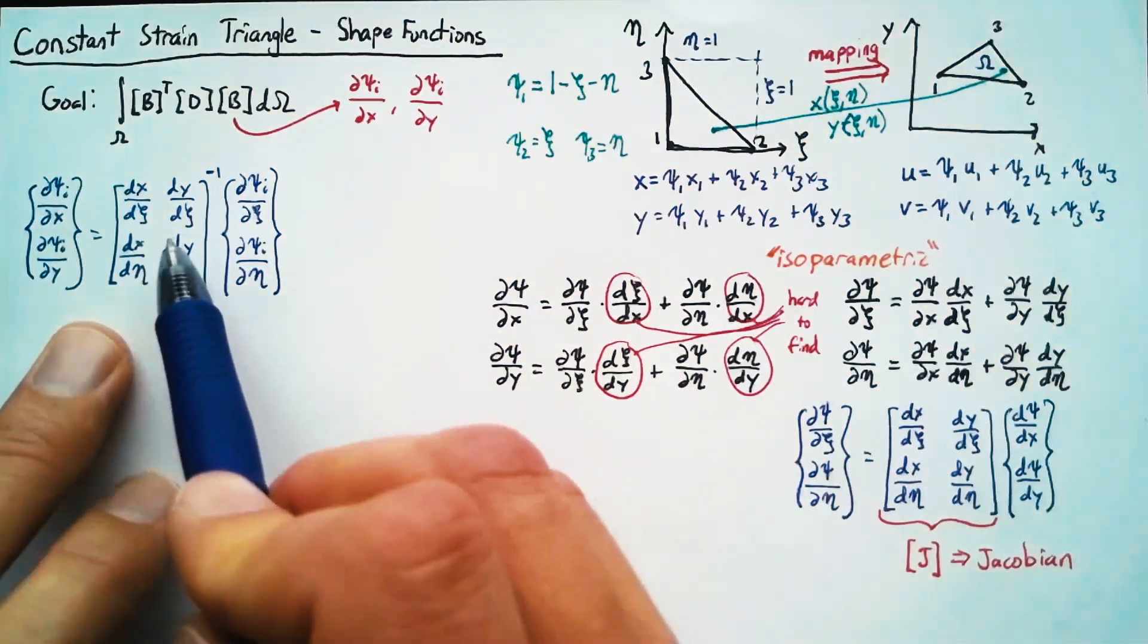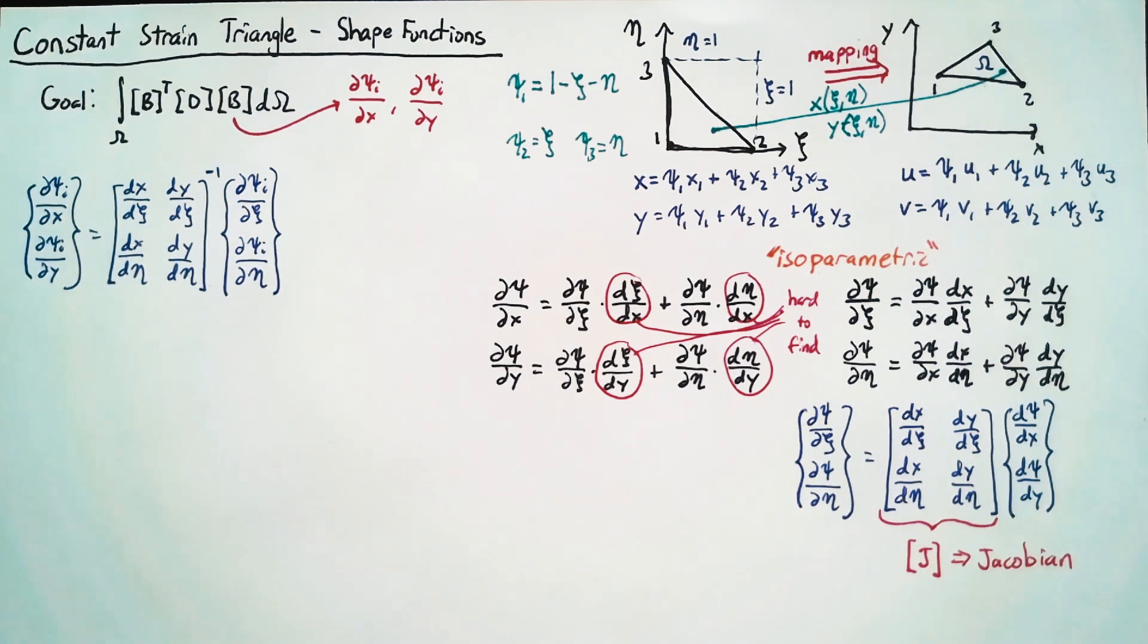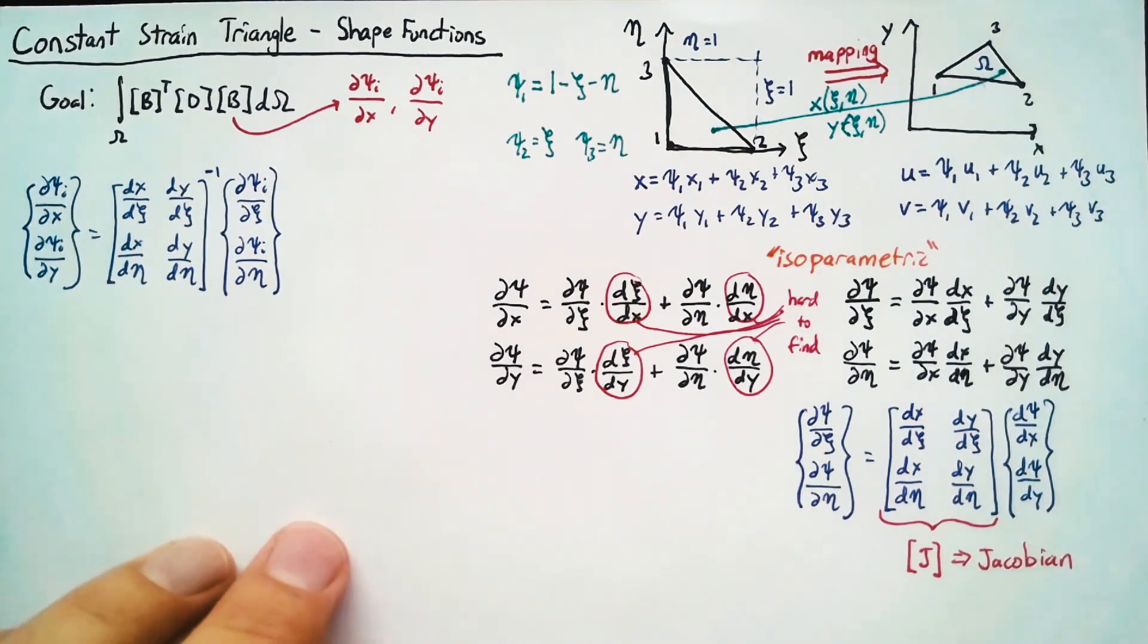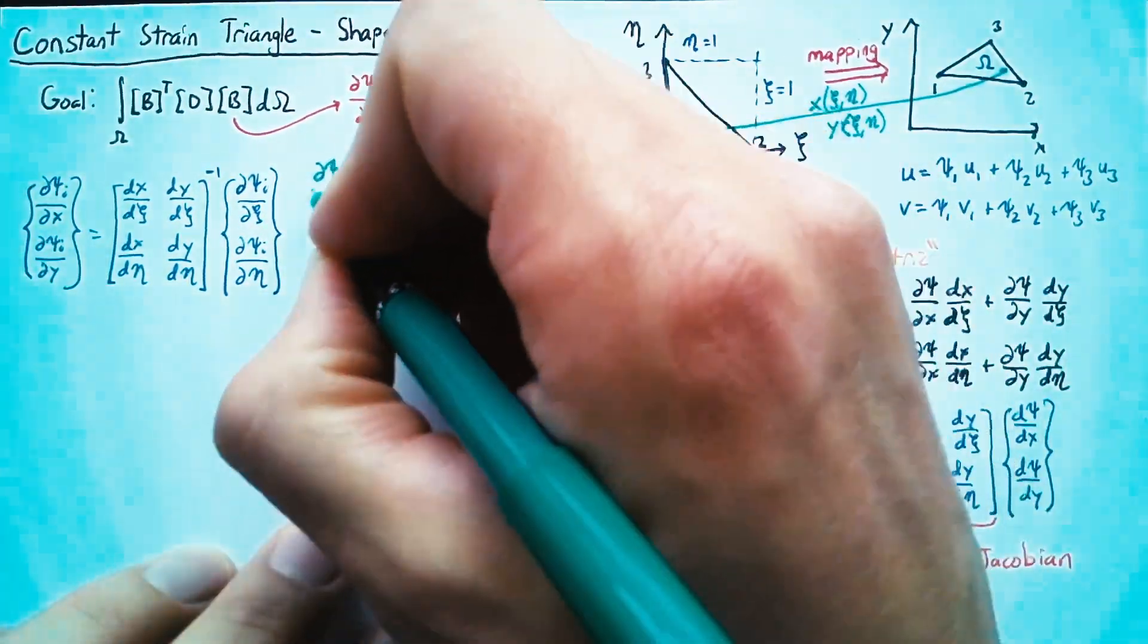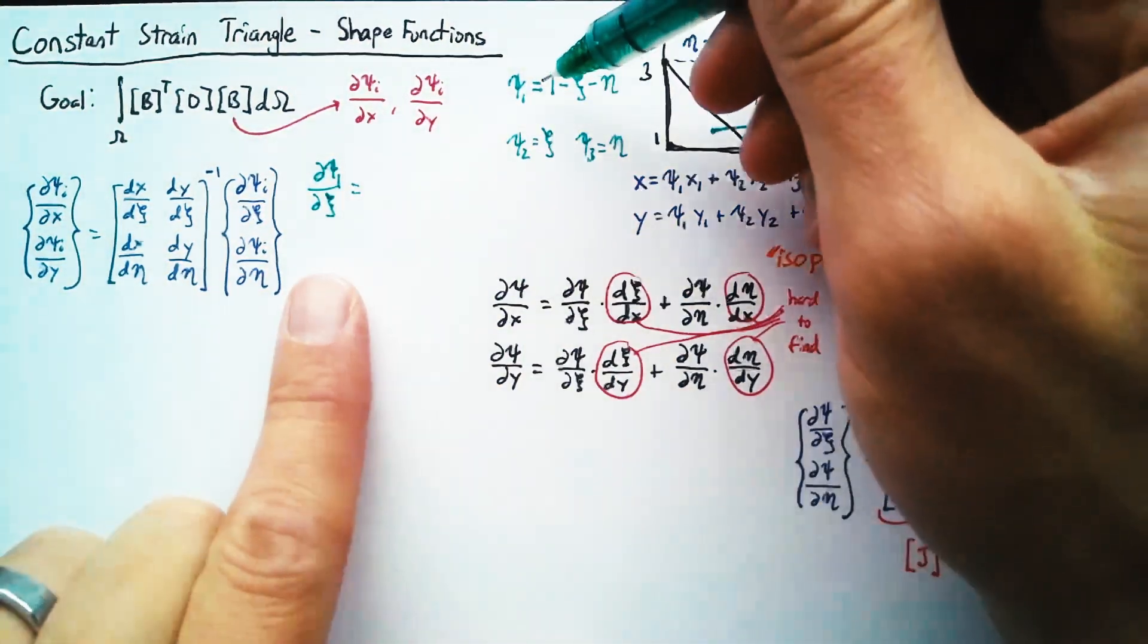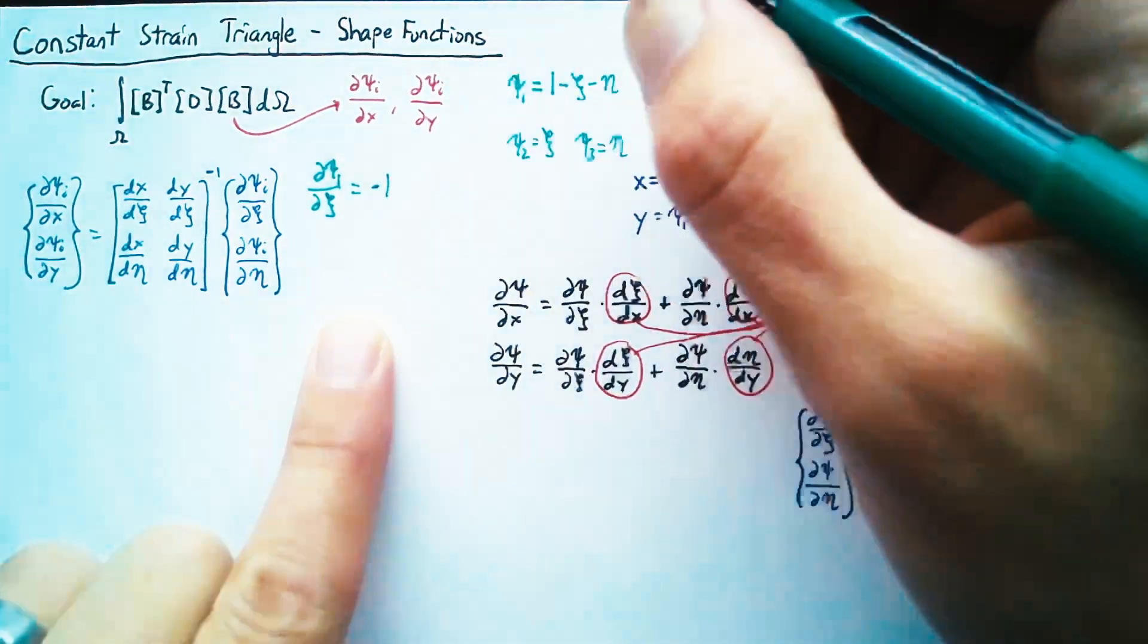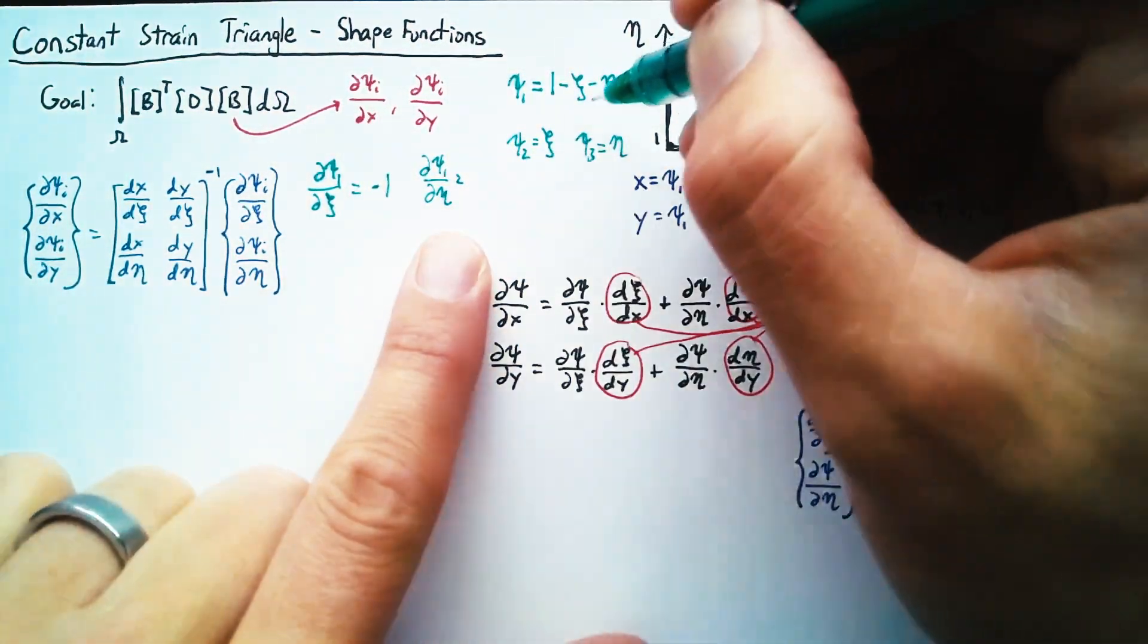Now we're set up in a place where everything on the right-hand side of the equation is known. And all we need to do is determine what these derivatives are. First off, let's find the derivatives of Psi one with respect to C. We're just taking the derivative of this function, and so that's just going to end up being negative one. dPsi one/deta is also negative one.